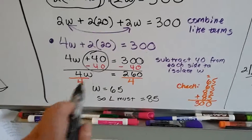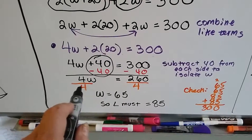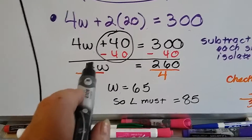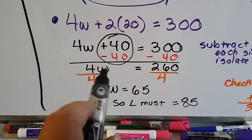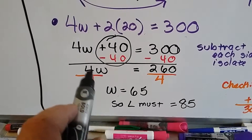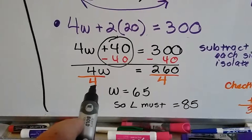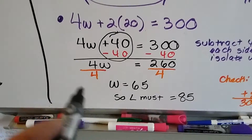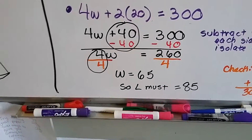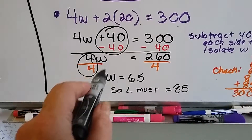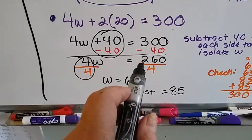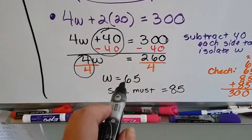Now we divide each side by 4 to isolate W. Because 4W means 4 times W, the inverse of multiplication is division. Dividing each side by 4 gets rid of the 4, leaving 1W. And 260 divided by 4 is 65.